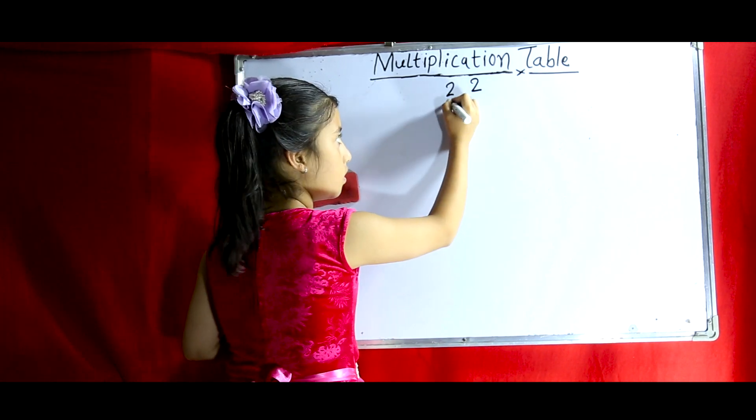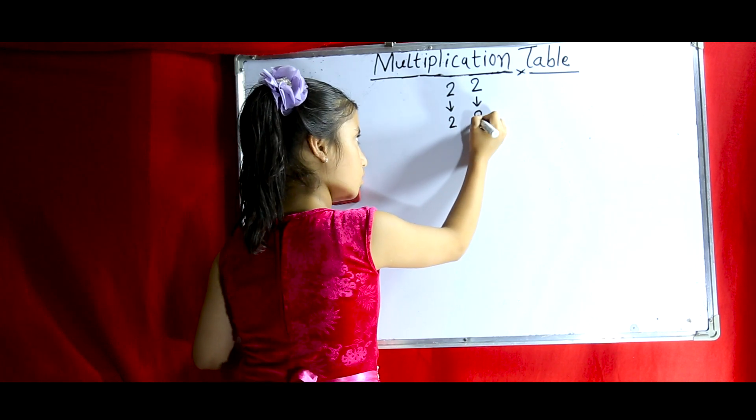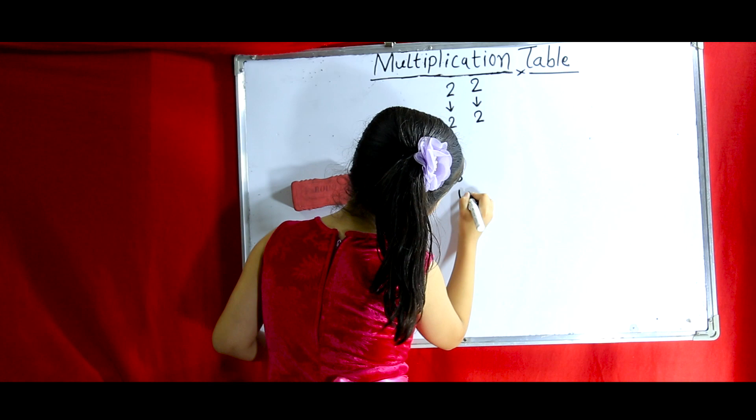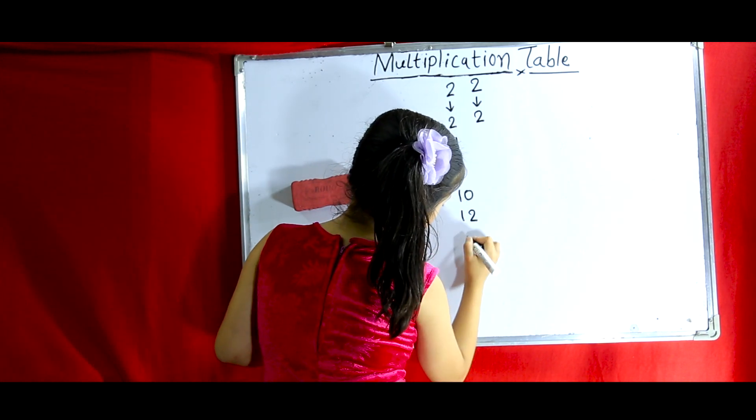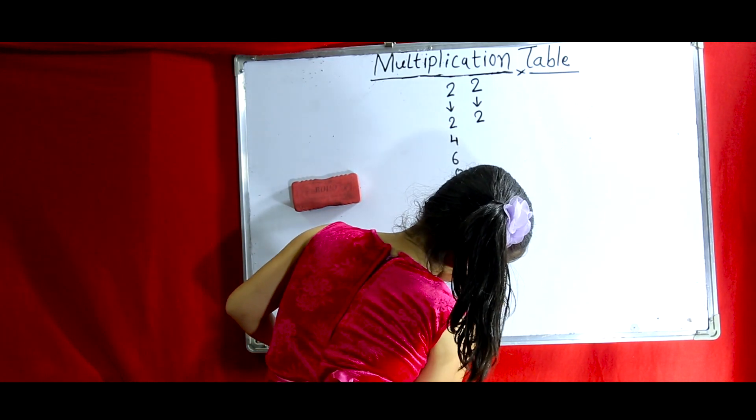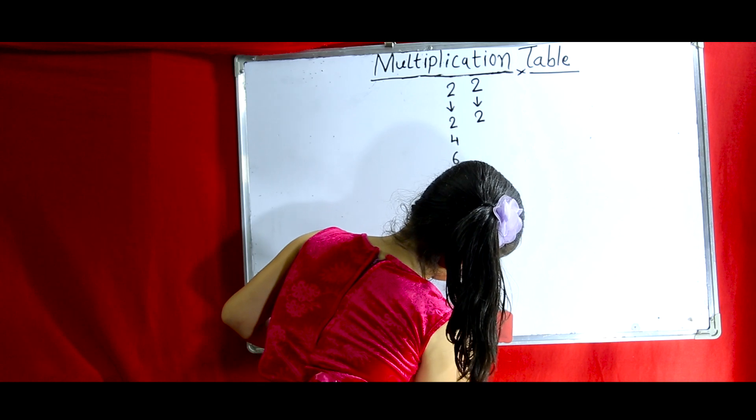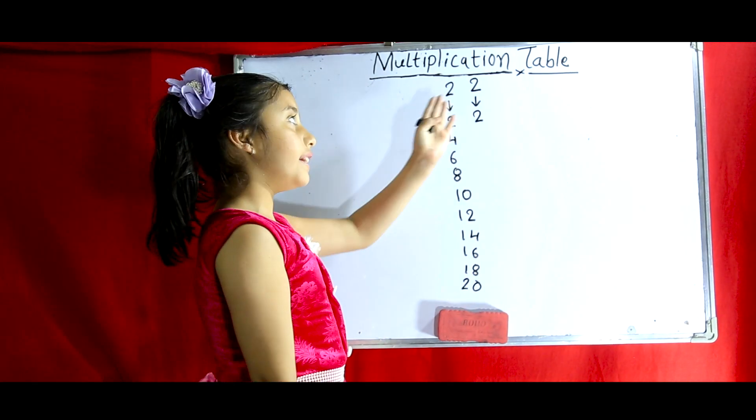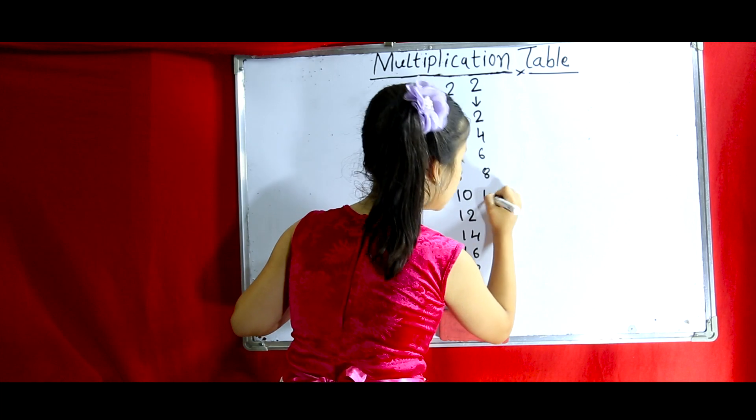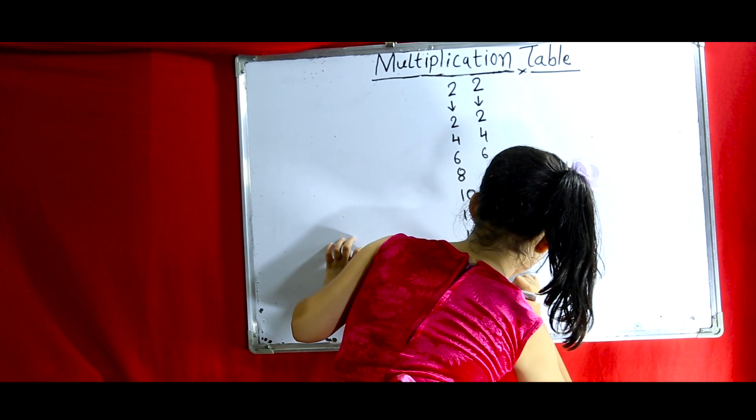22, 22, 22, 22. 4, 6, 8, 10, 12, 14, 16, 18, and 20. Here are 22. So, we have to write the same table again. 4, 6, 8, 10, 12, 14, 16, 18, 20.